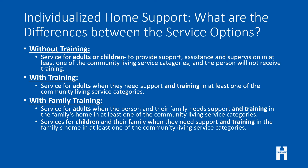What are the differences between the individualized home support service options? Without training is a service for adults and children to provide support, assistance, and supervision in at least one of the community living service categories, and the person will not receive training — it's more for support and supervision. With training is a service for adults when they need support and training in at least one of the community living service categories. With family training is for adults or children: for adults when the person and their family needs services and training in the family's home in at least one community living service category; for children and their family when they need support and training in the family's home in at least one community living service category.